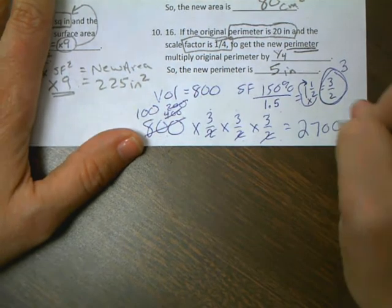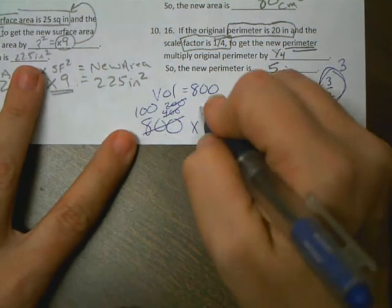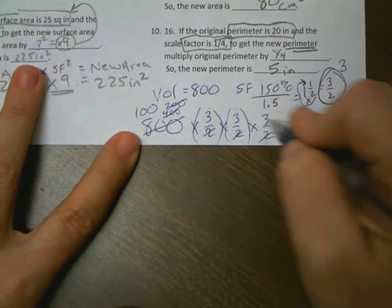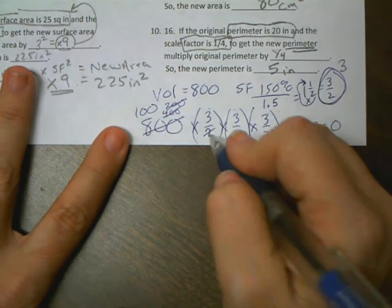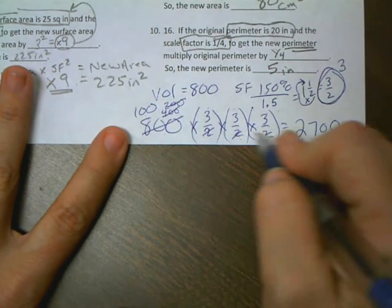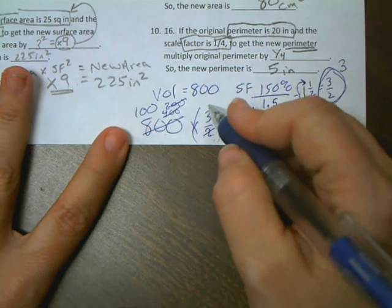So if you work out that problem, it would be times 3 over 2, times 3 over 2, times 3 over 2. But what was the shortcut? Do the dividing before you did the multiplying.